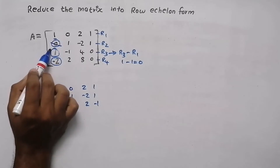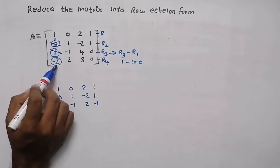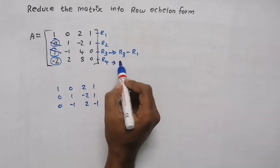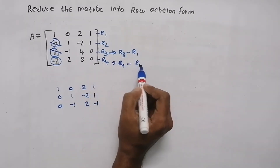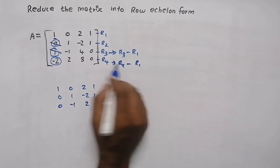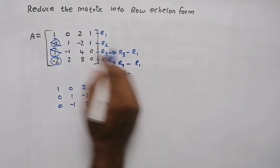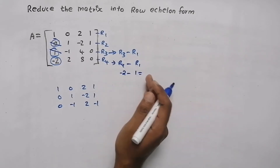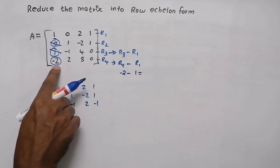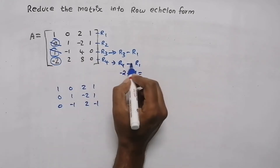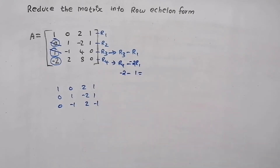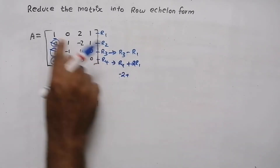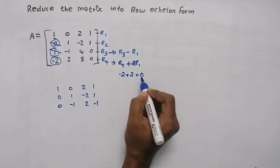Now we made this element as 0 and this element as 0. Now we need to make this element as 0 — it belongs to the fourth row. So we need to do an operation in the fourth row. R4 minus R1: R4 is minus 2, minus R1 is 1, so minus 2 minus 1 — we are not getting 0. So in order to make this 0, we place the element minus 2 here, meaning we use minus 2 R1, which becomes plus 2 R1 (minus and minus becomes plus). So R4 plus 2R1: minus 2 plus 2 = 0.